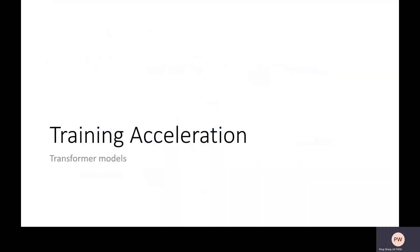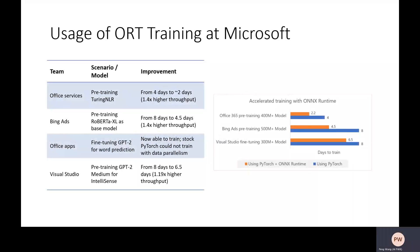Let's see some results about ORT training acceleration. Here are some proof numbers. For some cases like the integration with Office services, we could see 1.4x higher throughput using ORT — meaning for one single training recipe, ORT could reduce almost half of the time to complete training. Beyond the listed BERT, GPT-2, and RoBERTa XL models, we also see promising speedup in our development for even larger models: 1.5 billion, 2 billion, 2.5 billion, and even larger sizes.